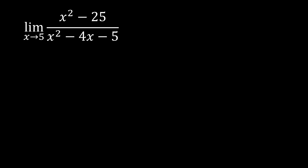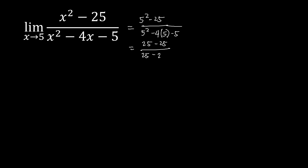Let's have another example. We have the limit of x squared minus 25 over x squared minus 4x minus 5 as x approaches 5. Using substitution, we get 5 squared minus 25 over 5 squared minus 4 times 5 minus 5, which simplifies to 0 over 25 minus 20 minus 5, giving us 0 over 0. So we need to factor the function.